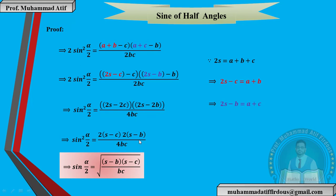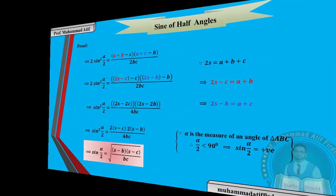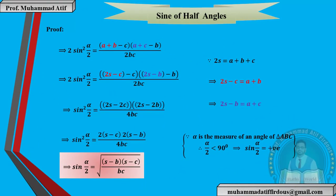When we take the square root, we take the positive sign. The reason is that α is an angle of a triangle, and when we divide by 2, it will be less than 90°. Since it lies in the first quadrant, all trigonometric values are positive. Therefore, we write a plus sign here. This is the distinction you need to understand.